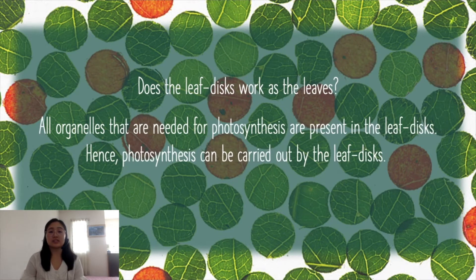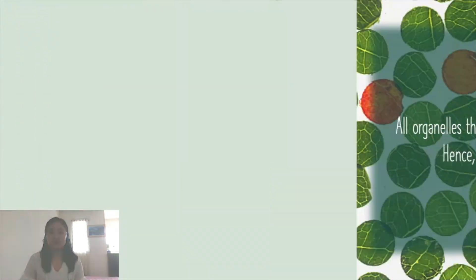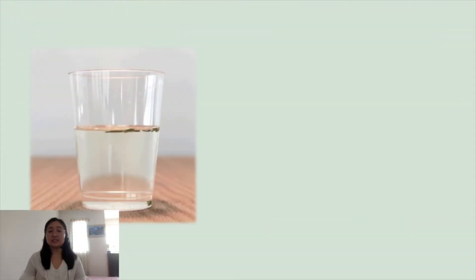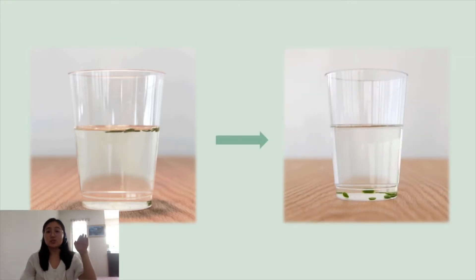All organelles like chlorophyll which is essential for photosynthesis are present in the leaf disk. Hence, photosynthesis can be carried out by the leaf disk. Initially, when the leaf disk and the solution is being poured into a beaker, the leaf disk will float in the solution because of the air in the spaces between the cells of the leaf disk. However, we will need the leaf disk to sink to the bottom of the beaker. How and why are we going to do that?